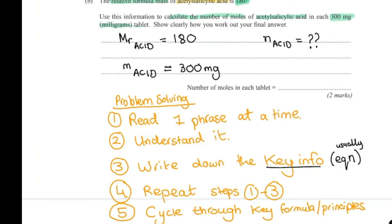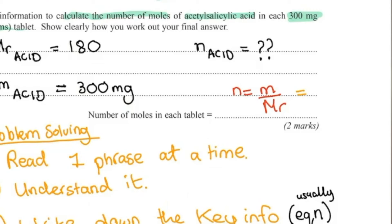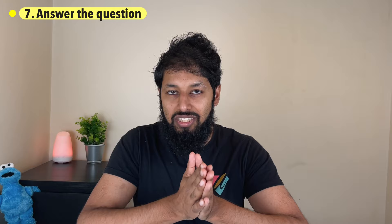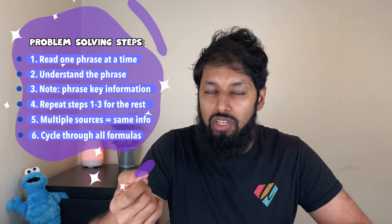Write down all the formulas that the information you've jotted down could be related to. Then ask: what science or rule do I know that applies? In this case: moles = mass / Mr. Number seven: answer the question — solve it. A big part of science exams is these long worded questions, and this is how you break them down. Here's the funny thing: steps one through six were all done just to understand the question. Step six is where you apply the formula, and step seven is where you actually do the science.